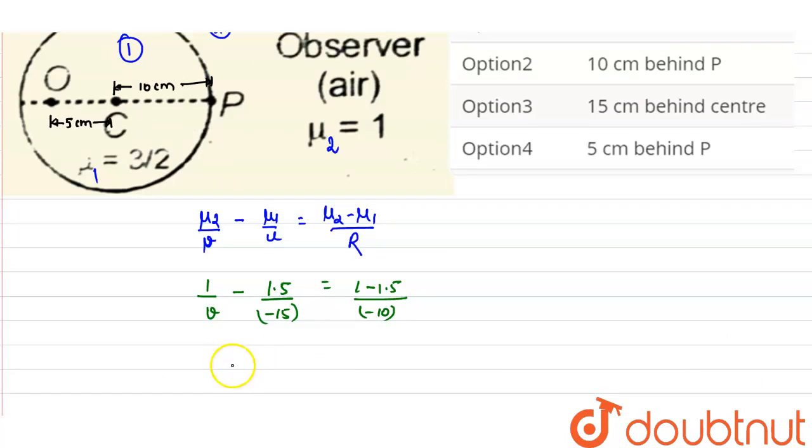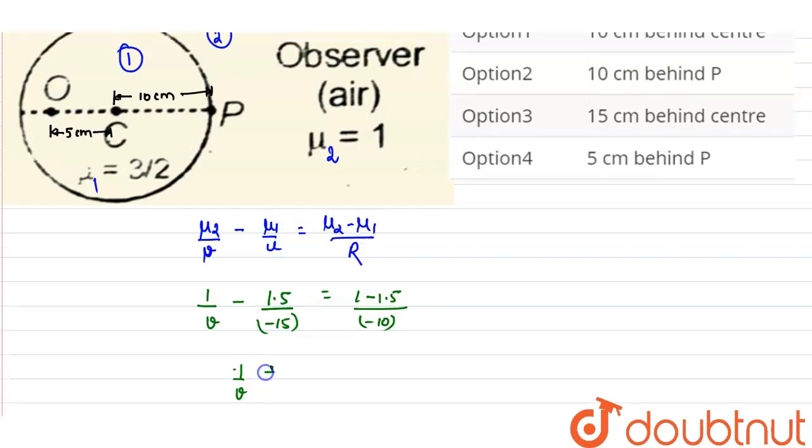So on solving this, we will get 1 upon V plus 1 upon 10, that will be equals to 1 upon 20.